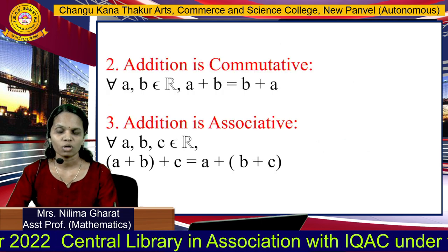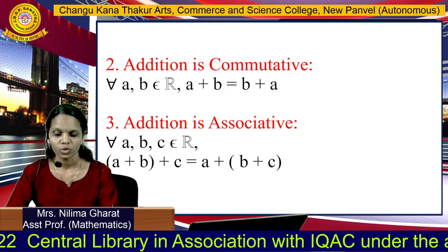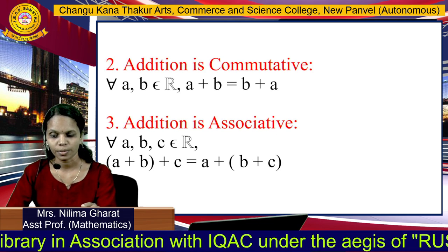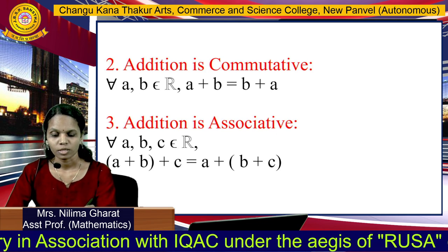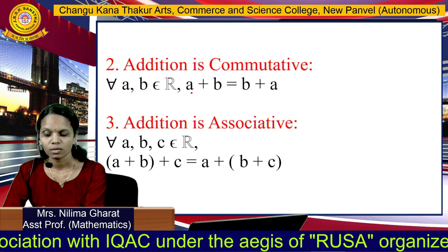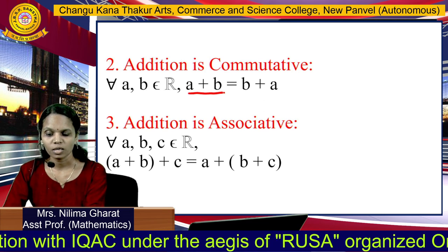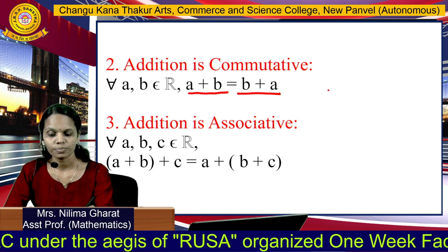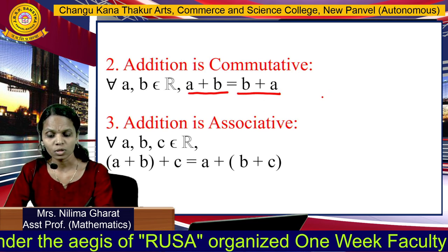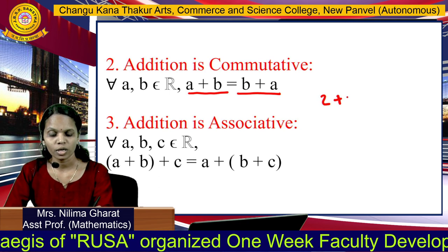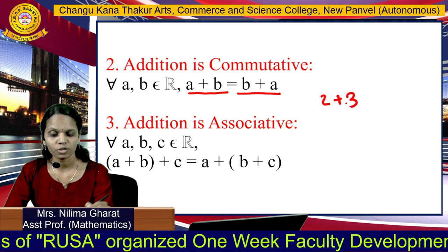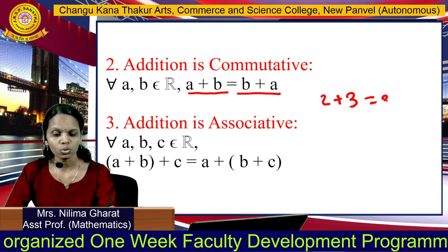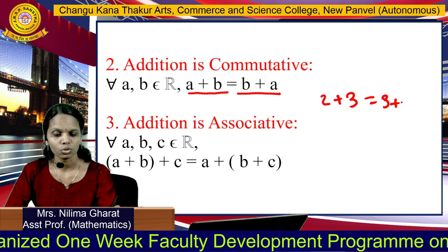The second property is the commutative property. If we take any two real numbers A and B, then A plus B equals B plus A. For example, 2 plus 3 equals 3 plus 2.